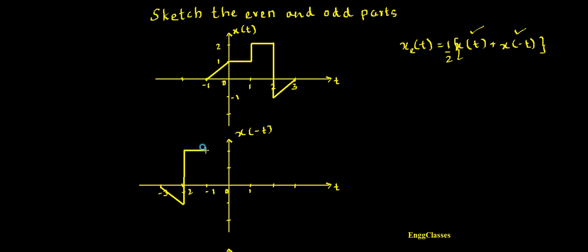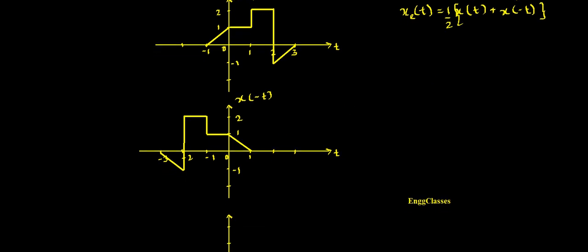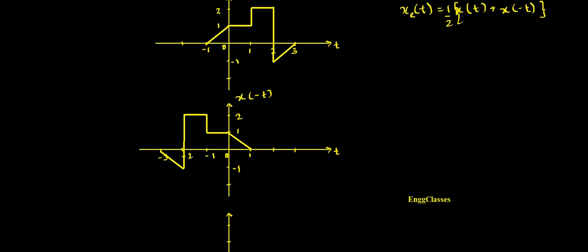This is how the reflected version of x(t) would look like. I call this signal x(-t). The amplitude would still remain the same — 1, 2, here and minus 1. This is the sketching of x(-t). Once this is done, I have to add these two signals to get the even part of the signal.